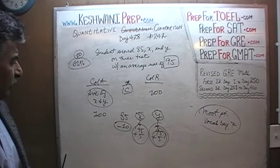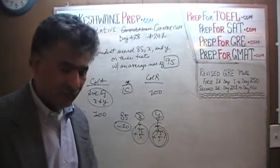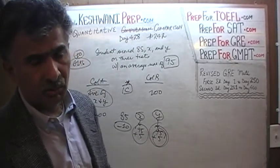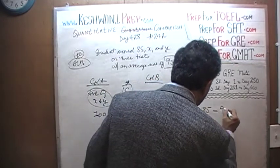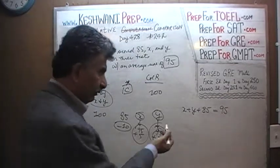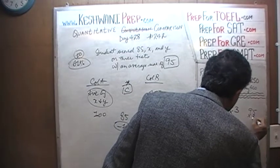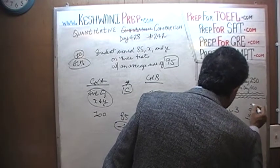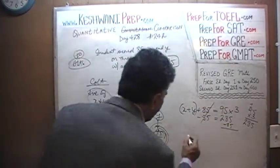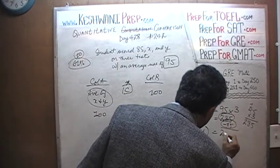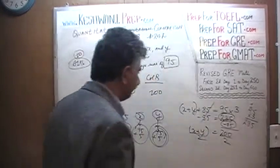Another way to do this problem is the classical way. We have 3 exams: X, Y, and 85, with an average of 95. That means the sum of these 3 numbers has to be 95 times 3, which is 285. X plus Y is what we are interested in, so let us subtract 85 from both sides. X plus Y equals 285 minus 85, which is exactly 200. Since the sum of X and Y is 200, their average is 100 — divide by 2. The average of X and Y is 100, so the answer is C.